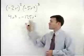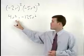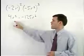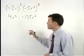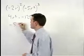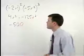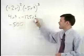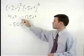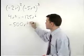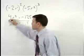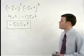To simplify further, we apply the product rule for our powers and multiply the coefficients together. So we have 4 times negative 125, which is negative 500. And for our powers we add the exponents, 2 plus 6. So we have r to the eighth. The answer is negative 500 r to the eighth.